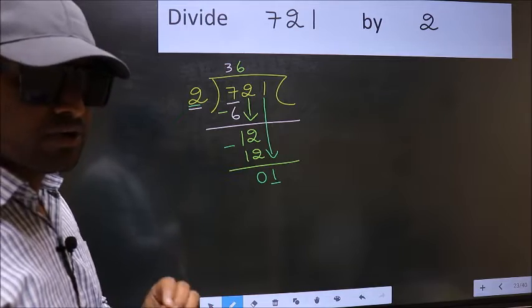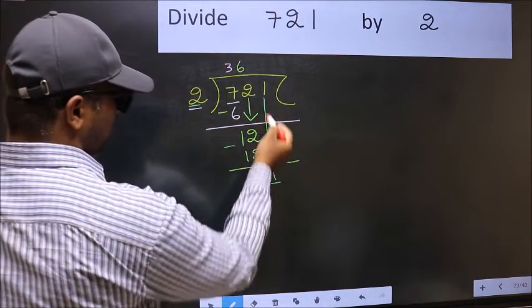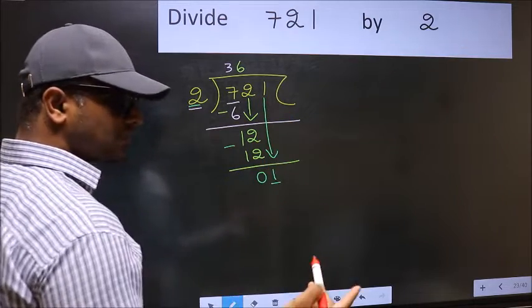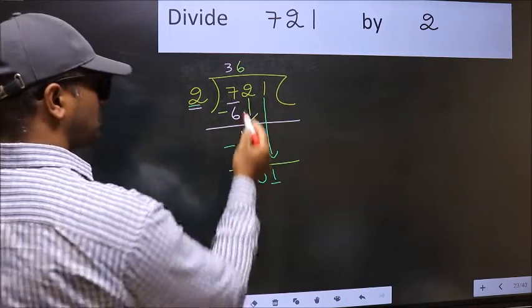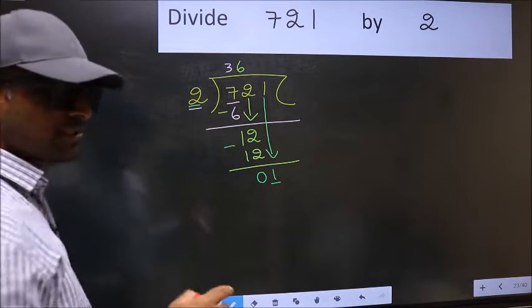Why is it wrong? Because, just now you brought this number down. And in the same step, you want to put a dot and take 0. Which is wrong.